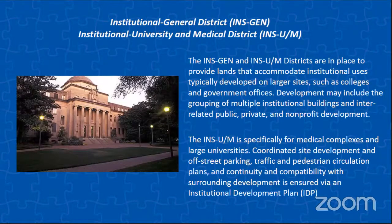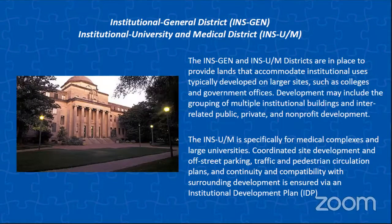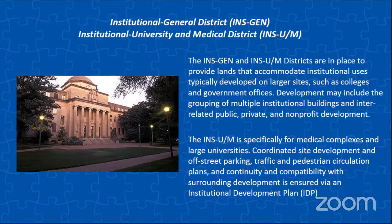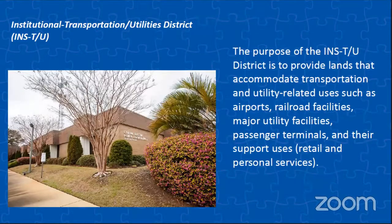We have our institutional general district as well as our institutional university medical district — these will often go hand in hand under the new ordinance. The institutional general district is for development and grouping of multiple institutional buildings and interrelated public, private, and non-profit development, often affiliated with larger sites such as colleges and government offices. The institutional university and medical district is specifically for medical complexes and large universities. Coordinated site development and off-street parking, traffic and pedestrian circulation plans, continuity and compatibility with surrounding development is ensured via an institutional development plan or IDP. We also have our institutional transportation utilities district, providing lands that accommodate transportation uses as well as utility related uses such as airports, railroad facilities, and major utility facilities.